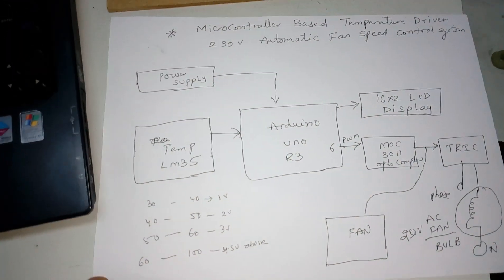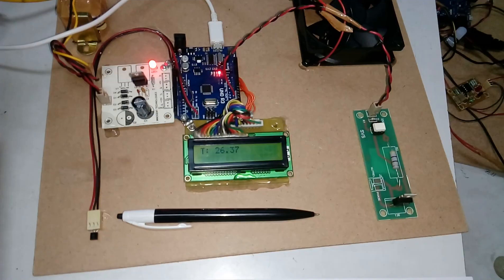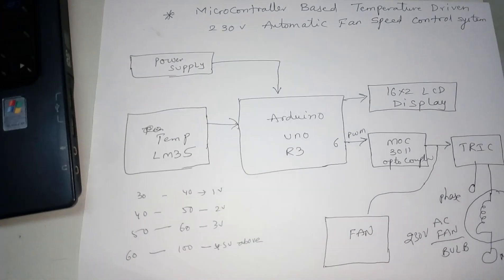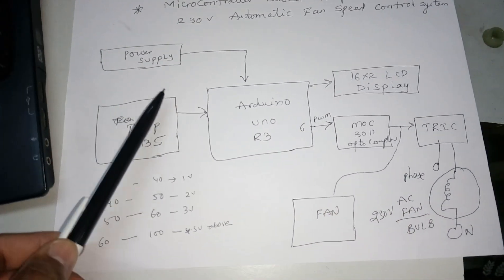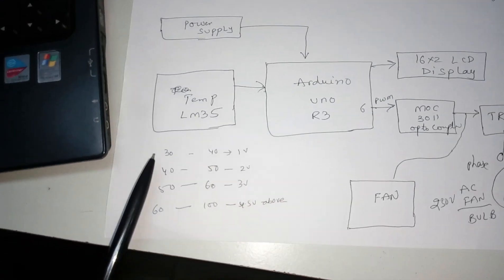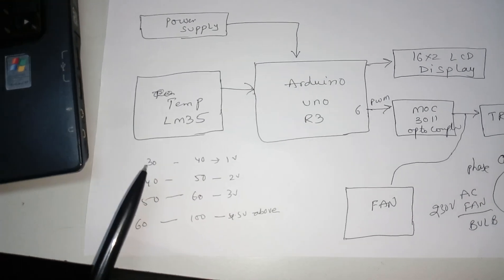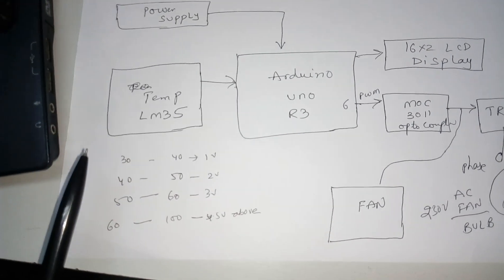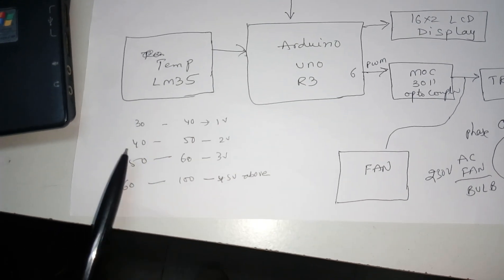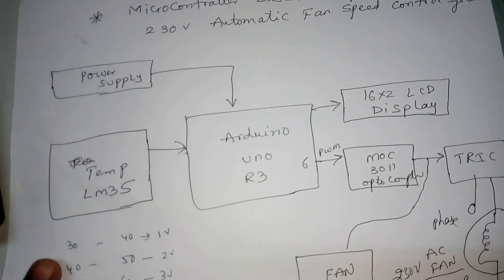The project title is microcontroller-based temperature-driven 230-volt automatic fan speed control system. In this project we are using one power supply, one Arduino Uno R3 development board, and one LM35 temperature sensor — a precision sensor ranging from minus 55 degrees centigrade to 150 degrees centigrade. We are using temperature conditions: 20–30, 30–40, 40–50, 50–60, and 60 and above.